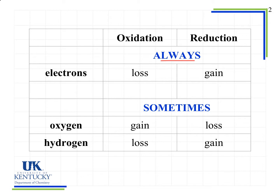For some reactions, identifying the transfer of electrons can be more challenging, particularly in organic or biological chemistry reactions. When we look at those, sometimes it's easier to look at it in terms of oxygen and hydrogen atoms. There is always a transfer of electrons even if we can't readily see it in a redox reaction.